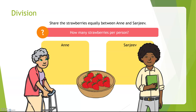How about this? Let's count the strawberries in the basket. One, two, three, four, five, six, seven, eight, nine, ten. There are ten strawberries in the basket.